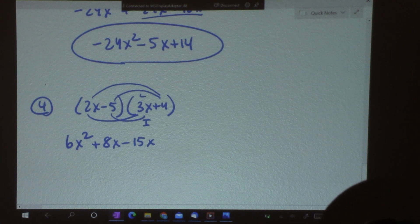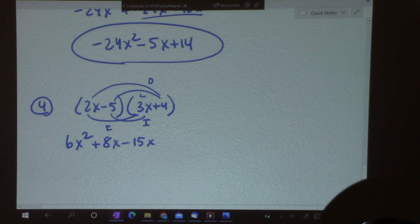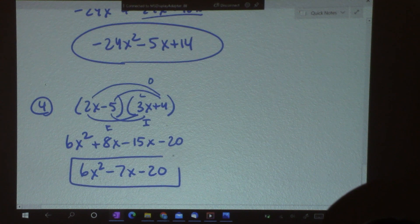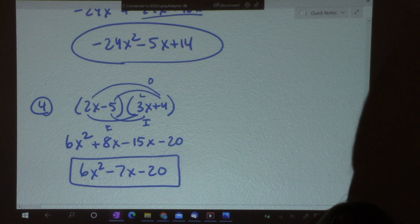And, last, I get negative 5 times 4 is negative 20. So, my final answer is 6x squared minus 7x minus 20. There we go.